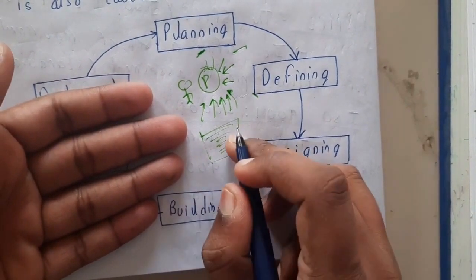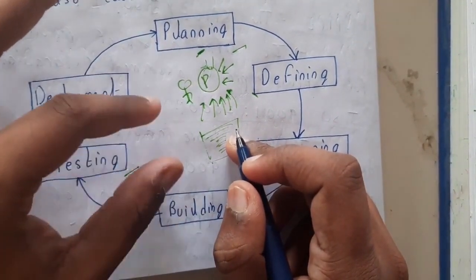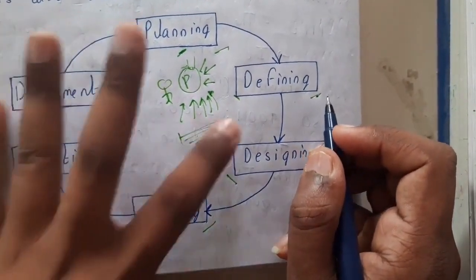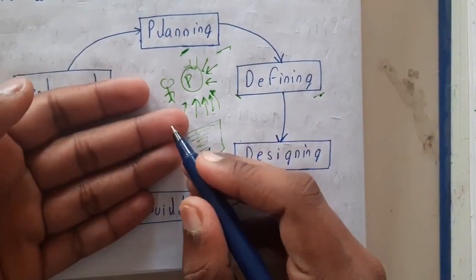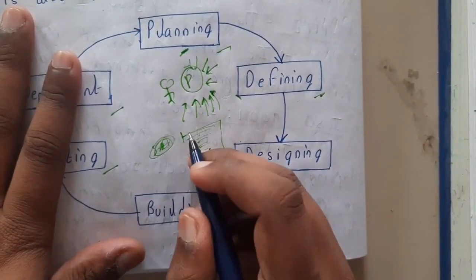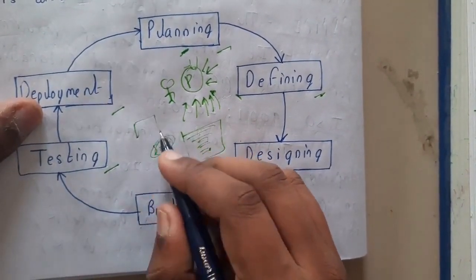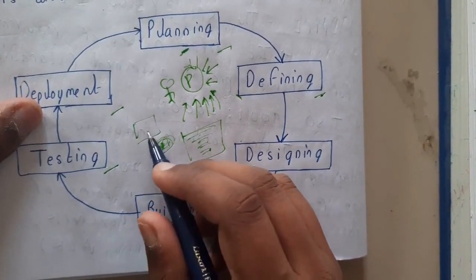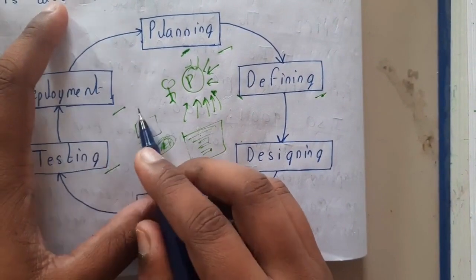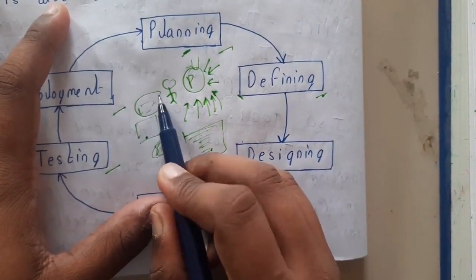Once you have an idea of what the problem is and what the solution is, you will move on to defining. Defining is where you will be creating the SRS — Software Requirements Specification. You'll be analyzing the software requirements, making a document, designing and planning it, so that you have a clear idea of what to do next.